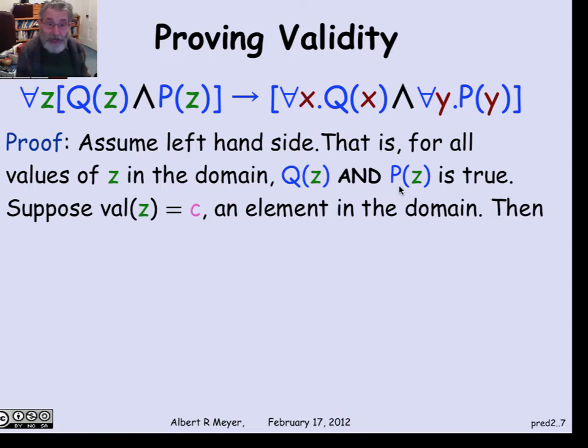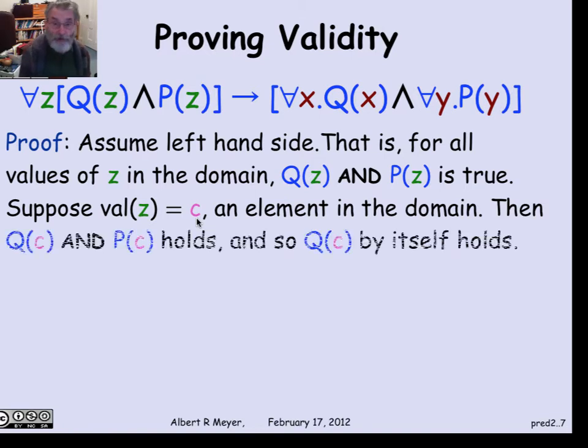Now, let's suppose that in our choice of looking at all the elements in the domain, that we choose a particular value of z for the variable z. Suppose that val(z) = c, an element in the domain. So we're saying that if the value of z is c, then what we can conclude is that both Q of c holds and P of c holds. Q of c no longer has any quantification in it. There's no variables in it anymore because c is a particular element. So to say that Q of c holds and P of c holds certainly implies that Q of c holds all by itself. That's easy. And that's a basic propositional bit of reasoning: P and Q implies P or Q.